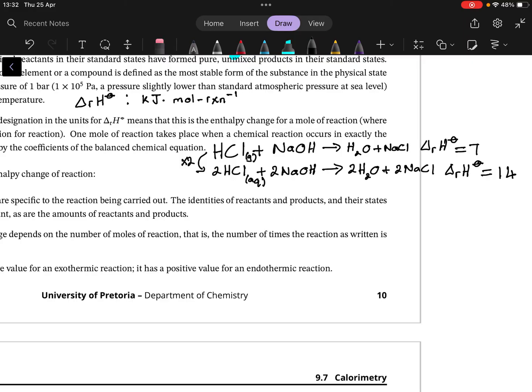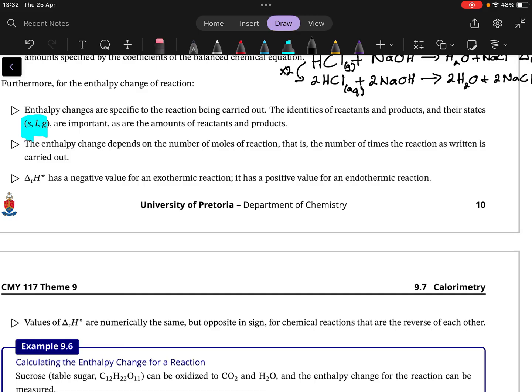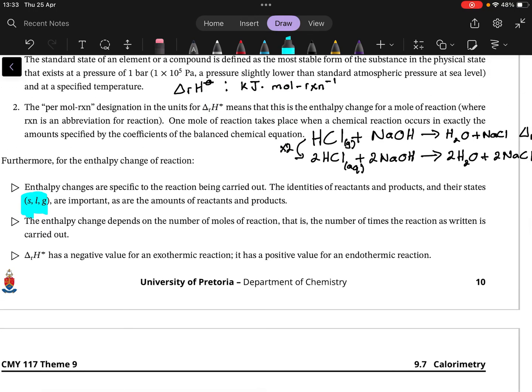The number of moles of reaction: the times two means first one HCl reacts with one NaOH to form the product, then another HCl reacts with another NaOH. We sum the enthalpies. The coefficient implies the reaction is happening twice, three times, or however many times.